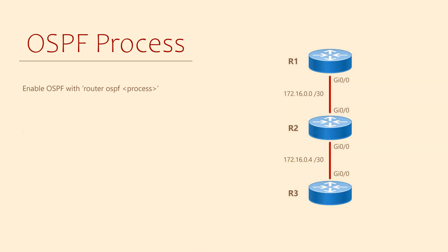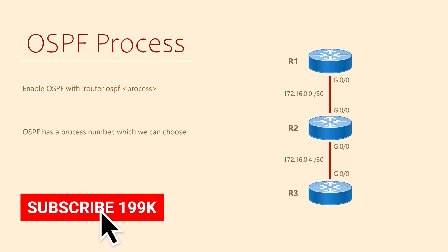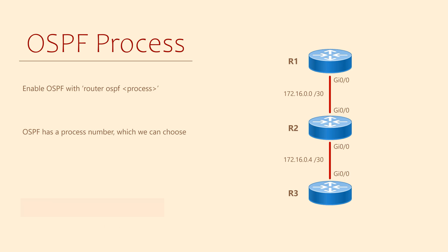10 is the process ID that we've chosen. This can be any number from 1 to 65535. At the CCNA level, it doesn't matter what number you choose. The reason we have a process number is to support advanced configurations — in some cases, we need to run more than one OSPF process. But one process is plenty for us, so we'll stick with that.